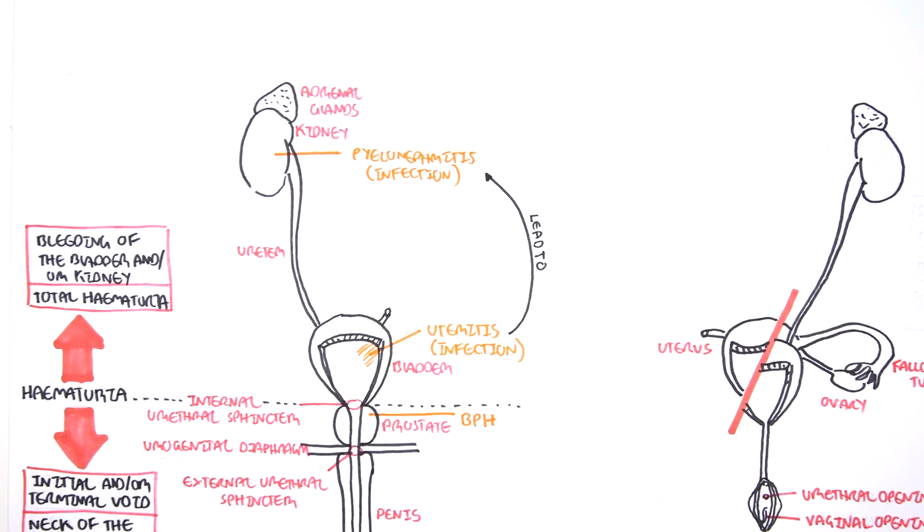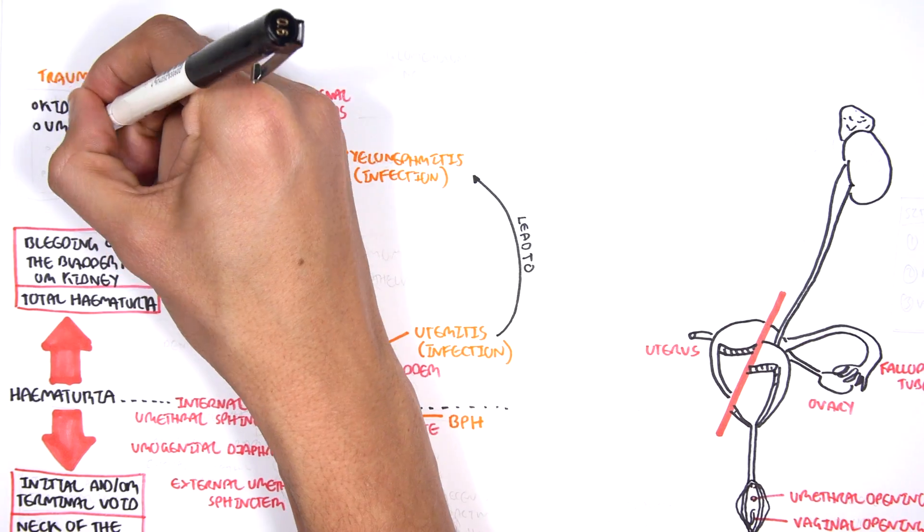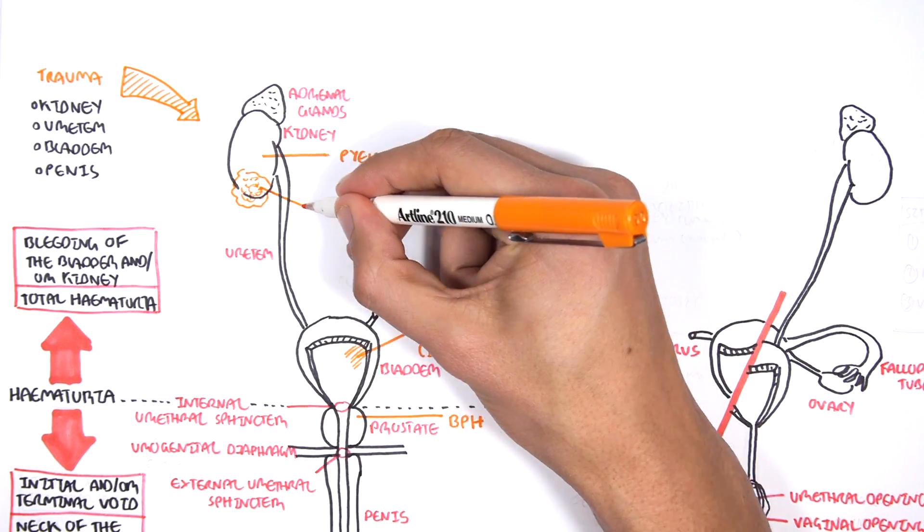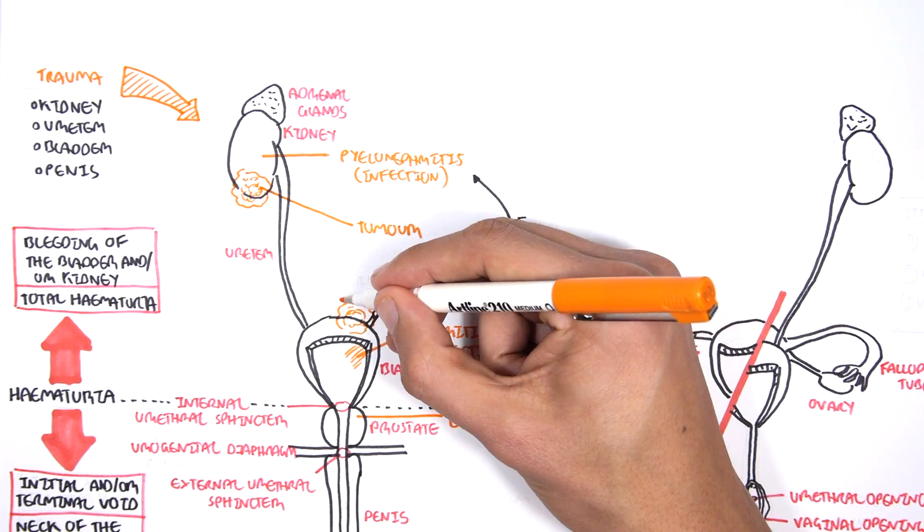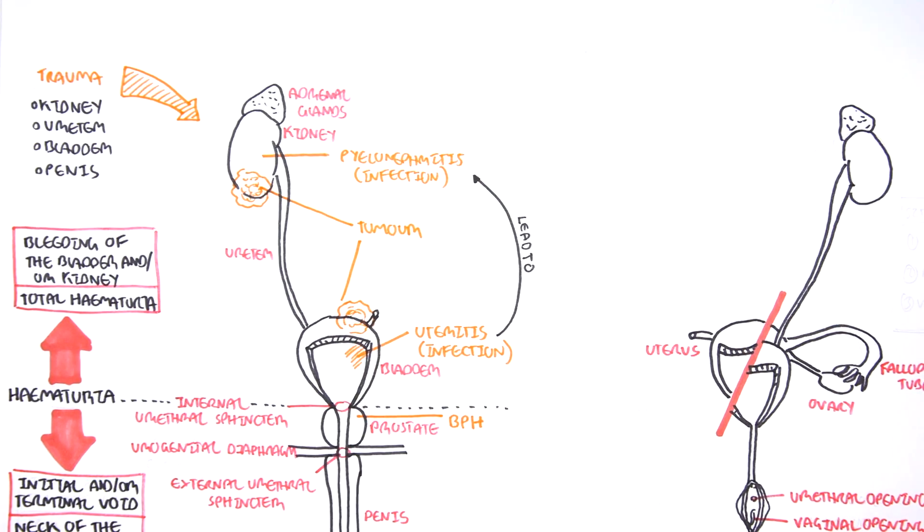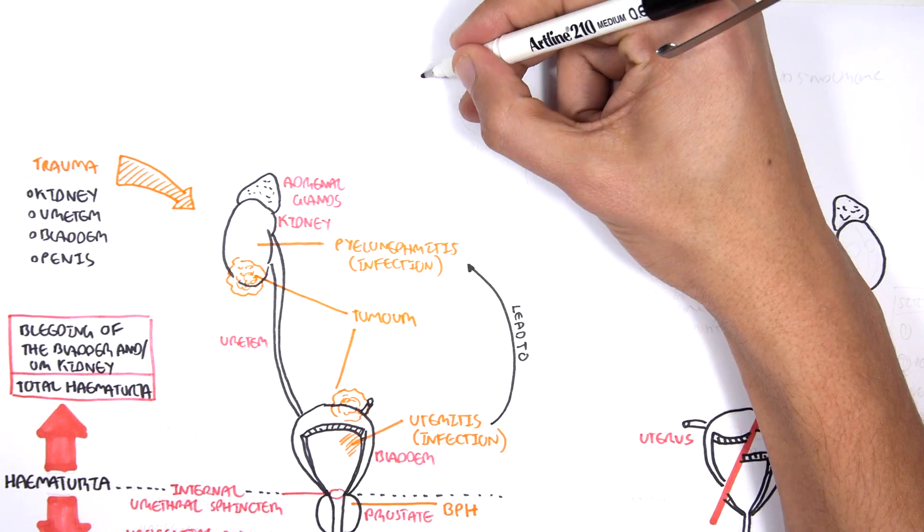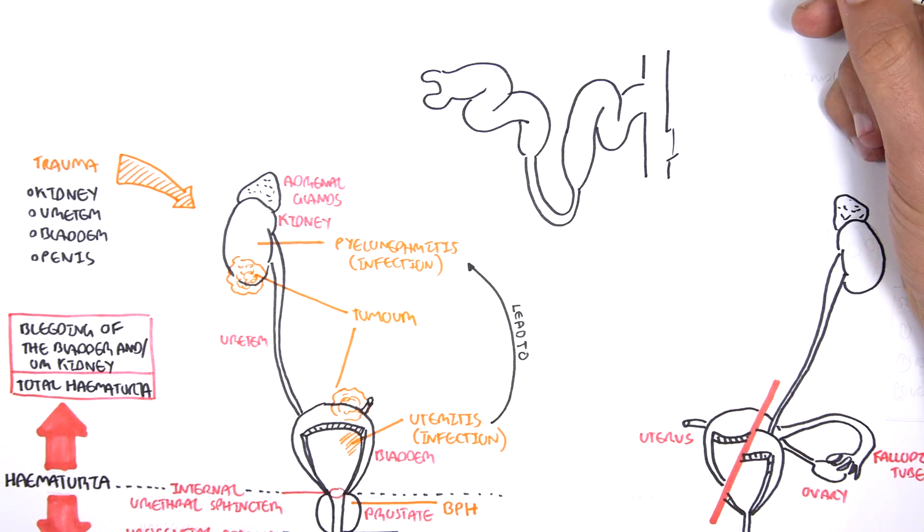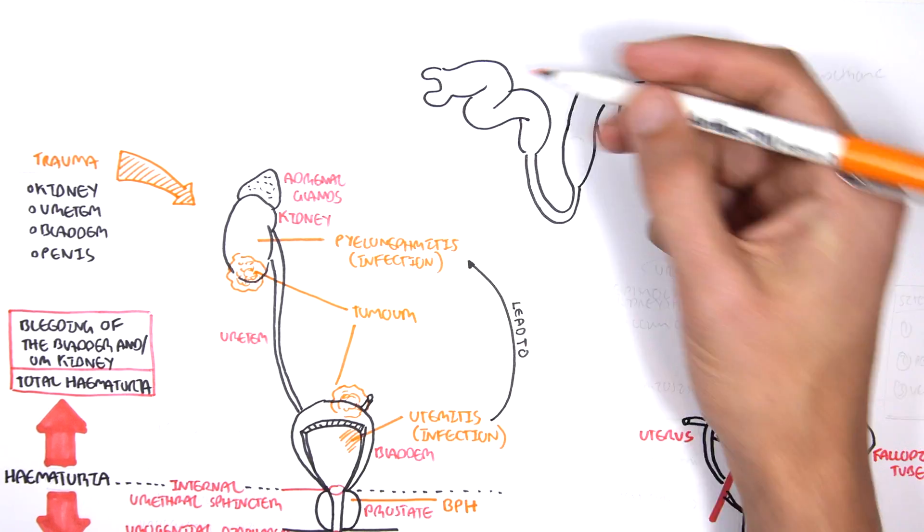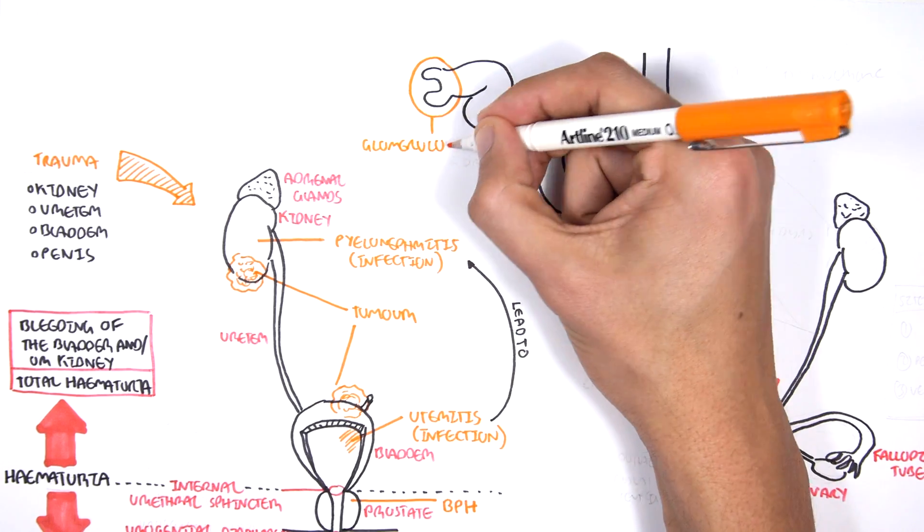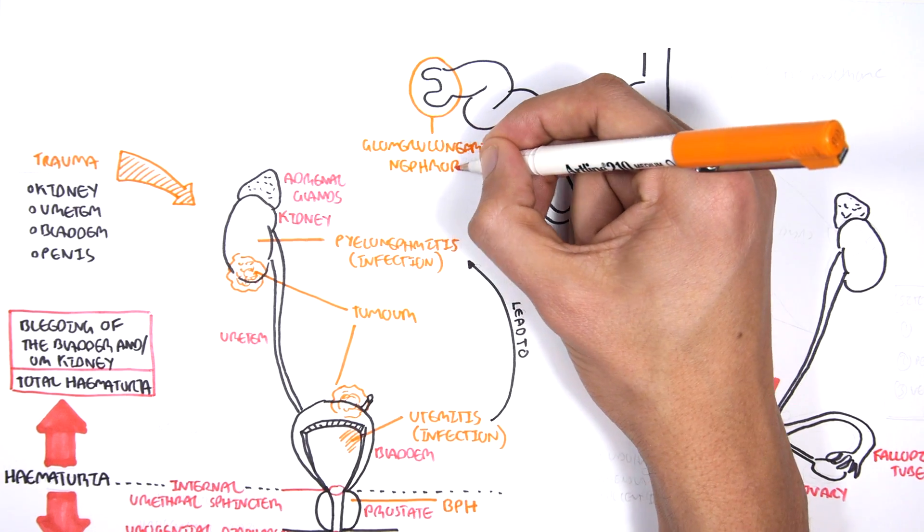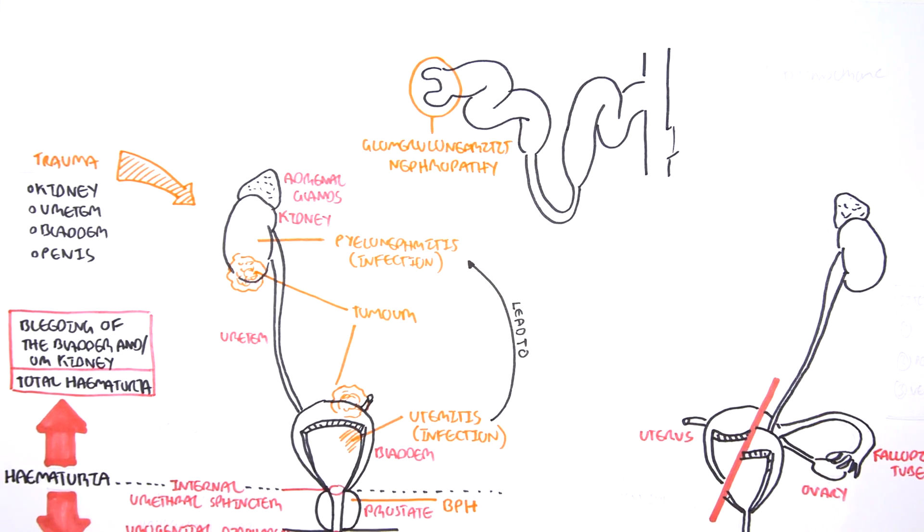Trauma to the kidneys or the ureter or the bladder or the penis itself can lead to hematuria. Obviously, cancer or growths, tumors in the kidneys or anywhere along the urological system can lead to hematuria. Of course, the functional units of the kidneys itself, which are the nephrons, things can cause problems in the nephron, specifically can lead to hematuria.